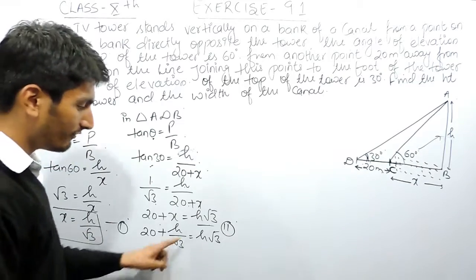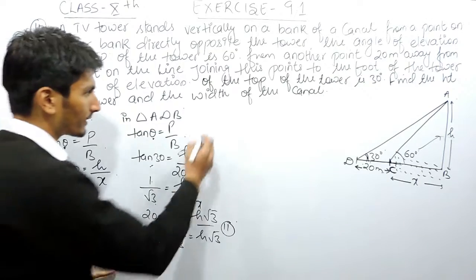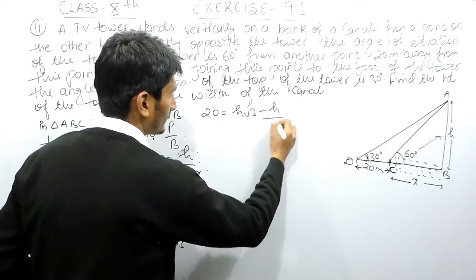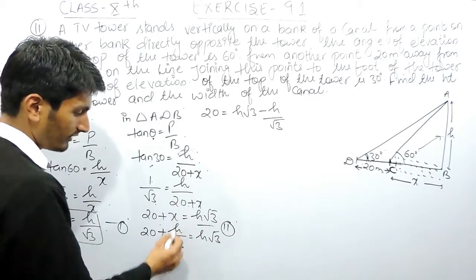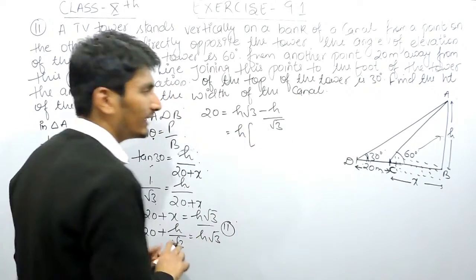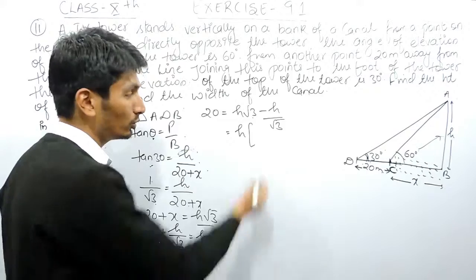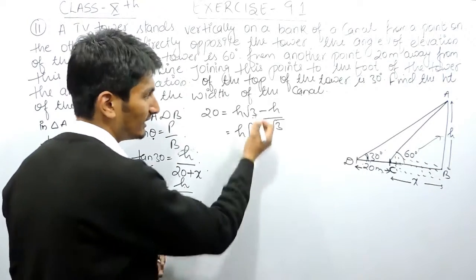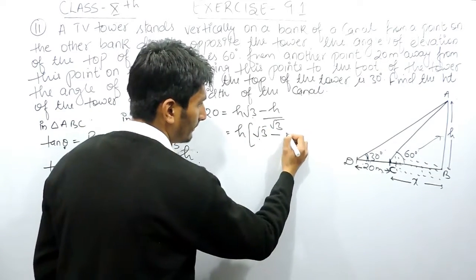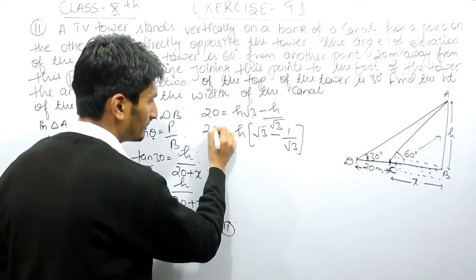Substituting x = h/√3 into the second equation: 20 + h/√3 = h√3. Shifting h/√3 to the right-hand side: 20 = h√3 − h/√3. Taking h as common: 20 = h(√3 − 1/√3). This keeps the calculation clean without substituting decimal approximations at this stage.